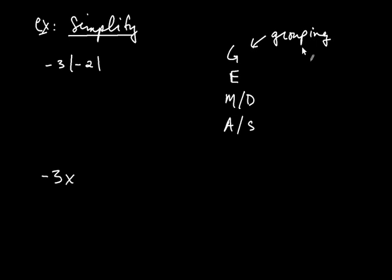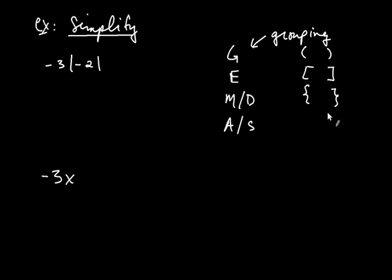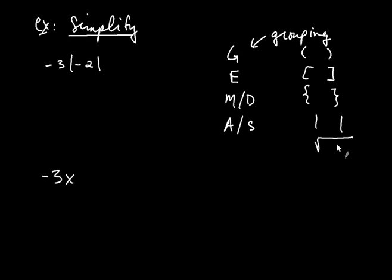G stands for grouping, as we've discussed. Grouping can come in lots of different visual forms — it can involve parentheses, or you could see brackets to indicate grouping. You could also see what are called braces. It turns out the absolute value falls under the umbrella of grouping as well, so the absolute value symbols are grouping symbols. Another example of a grouping symbol we'll see later is the square root symbol. That's why I use G instead of P — because grouping symbols can have lots of different forms.